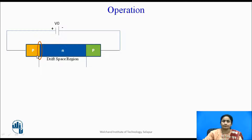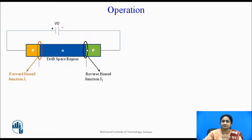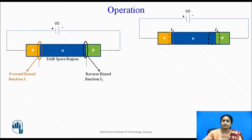The first junction between the P-type and N-type material is a PN junction connected to the positive terminal of the battery, so it is forward biased and is named J1. The second junction, formed on the other side, is connected to the negative terminal — the P-type is connected to the negative terminal — so it is in a reverse bias condition and is named J2. Due to forward bias at J1, the depletion region width is less, while at J2, which is reverse biased, the width of the depletion region is greater.